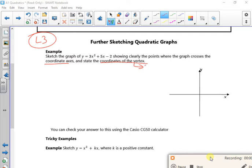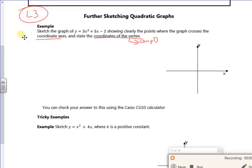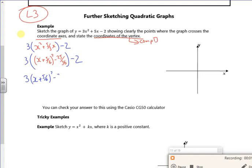So the vertex implies completing the square. What's quite nice is that you can also find all the roots by completing the square as well. So it's 3 lots of x² + 5/3x - 2. That's 3 lots of (x + 5/6)² - 25/36 - 2.